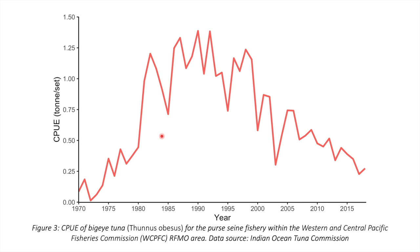However, since the tuna fleet has not declined in fishing efficiency since 1990, it is likely this decline in catch per unit effort is due to a reduction in the size of the bigeye tuna stock.